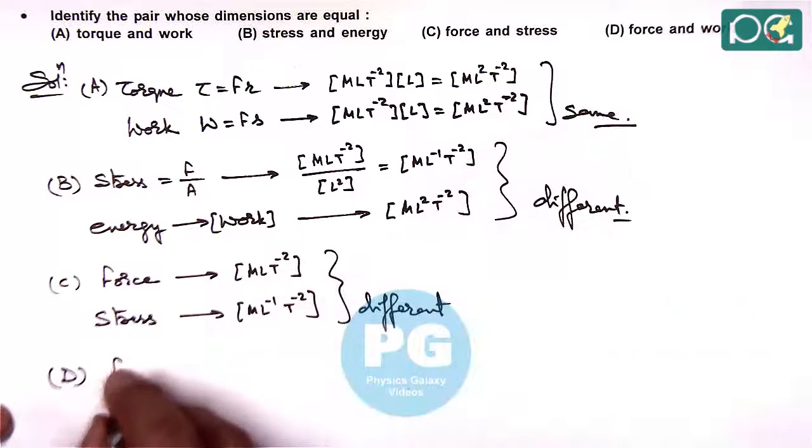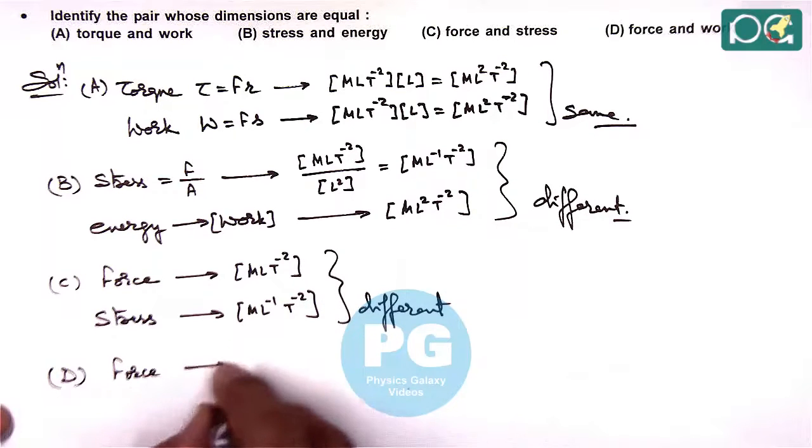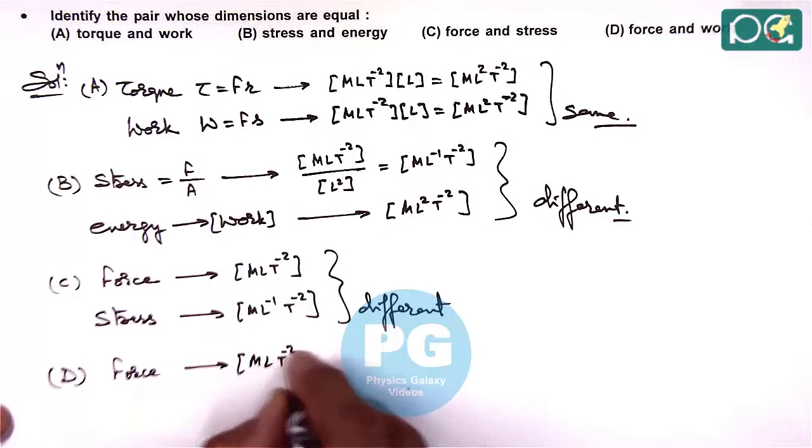Same for option D if we check with force, the dimension is M L T minus 2.